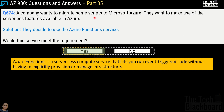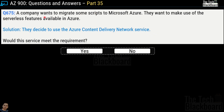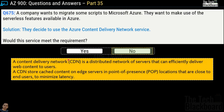One more variation: question number 675, same scenario but the solution presented is Azure Content Delivery Network service — would this meet the requirement? No, this is not the correct service. Azure Content Delivery Network, or CDN, is a distributed network of servers that can efficiently deliver web content to users. A CDN stores cached content on edge servers in point-of-presence or POP locations close to end users, thereby minimizing latency.